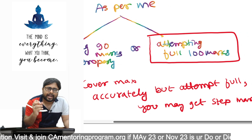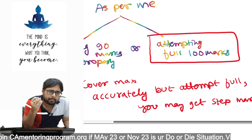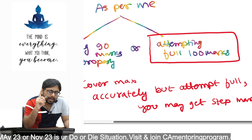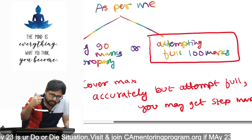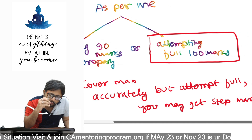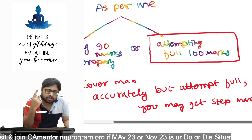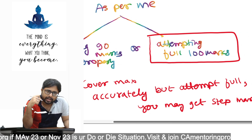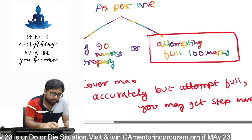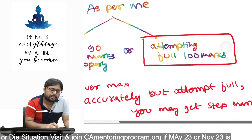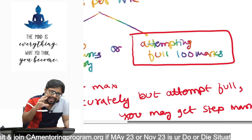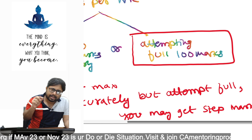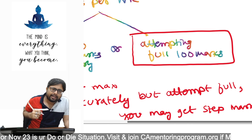Students also fail by one, two, or five marks. If you needed just one more mark and you had attempted those remaining 20 marks by writing something sensible, you could have gotten that mark. So I strongly suggest: write whatever you can properly, but don't leave anything blank just because you don't know it. Write any sensible thing related to the topic — you may get step marking, trust me.